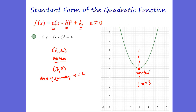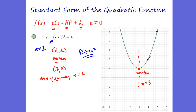The vertex form is really good for finding the vertex and axis of symmetry. The a value here is equal to 1, so it behaves like y equals x squared: over 1, up 1; over 2, up 4; over 3, up 9. When the a value is different from 1, there's a multiplier. If a equals 2, we go over 1 up 2, over 2 up 8, and so on. If a is negative, the parabola is concave down.